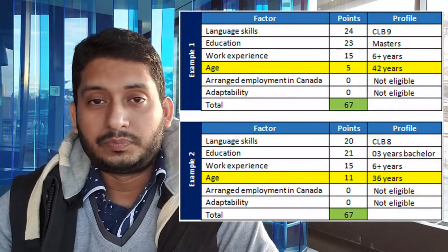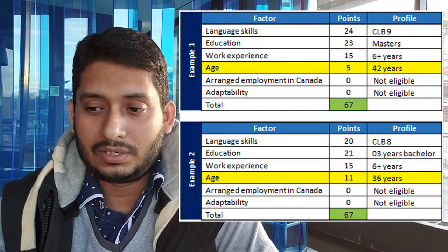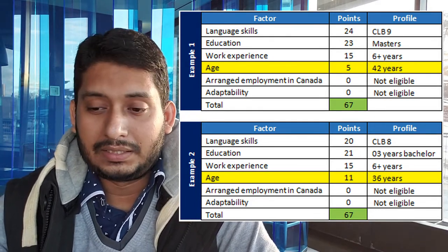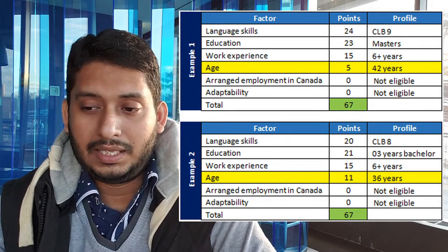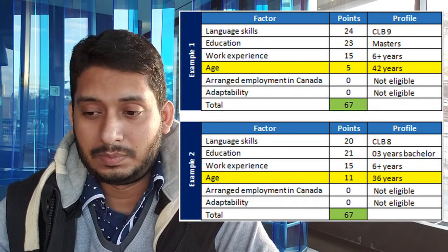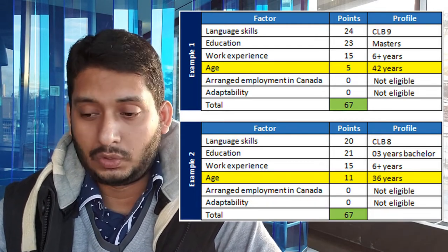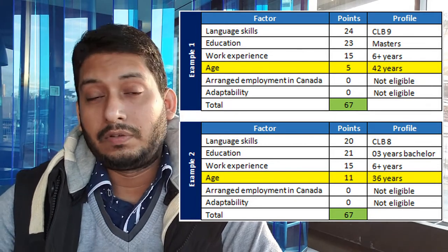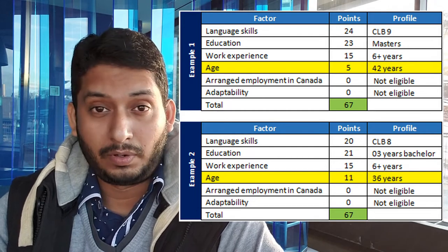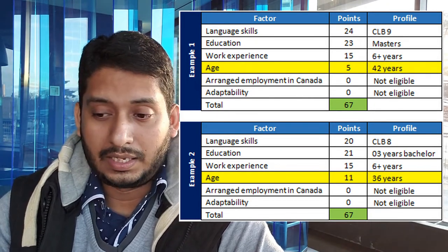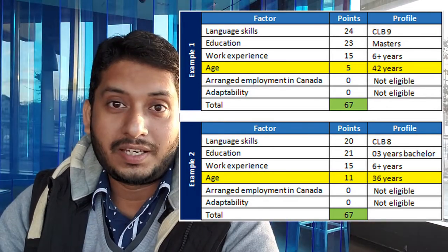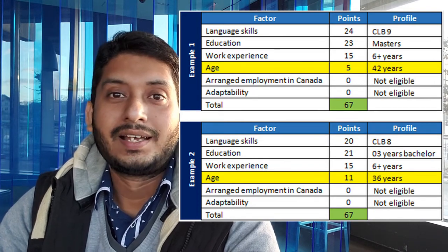Now I'll give a couple of examples so you can figure out your own situation. In Examples 1 and 2, I'm playing around with different age numbers, education, work experience, and other factors. Assuming average employment adaptability is zero for both cases, and varying between CLB 9 and CLB 8 with a Master's degree — in Example 1, even if your age is 42, you can still make 67 points, which is the minimum requirement. In Example 2, even at age 36 with CLB 8, you can still reach that threshold.